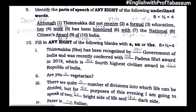Bit number ten: fill in any eight of the following blanks with A, AN, or THE. Timakka has been recognized by the Government of India and was recently conferred with the Padma Shri Award in 2019, which is the fourth highest civilian award in the Republic of India. Are you a vegetarian? There are quite a number of divisions into which life can be divided. But for the purposes of this evening, I am going to speak of two — the bright side of life and the dark side of life.